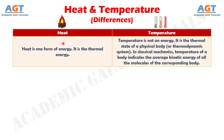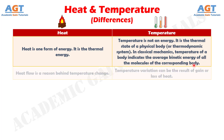Difference No. 1: Heat is one form of energy — it is thermal energy — whereas temperature is not an energy. It is the thermal state of a physical body or thermodynamic system. In classical mechanics, temperature of a body indicates the average kinetic energy of all the molecules of the corresponding body. Difference No. 2: Heat flow is a reason behind temperature change, whereas temperature variation can be the result of gain or loss of heat.